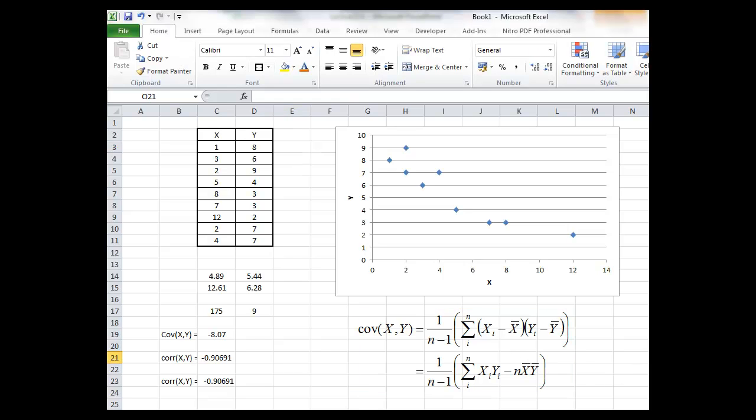Now the formula for the covariance is given in this equation here. Covariance between the random variables x and y is 1 divided by the sample size less 1 times the sum across the whole sample of the difference of each individual x from its mean times the difference between each individual y from its mean.